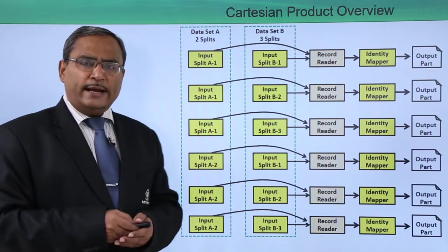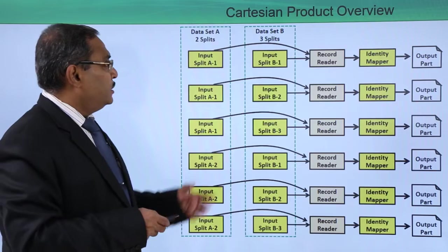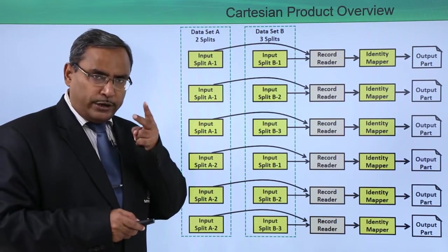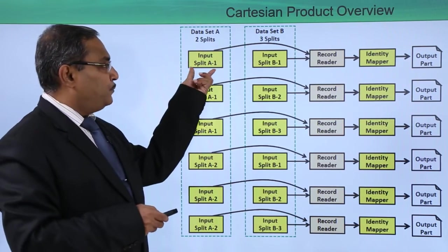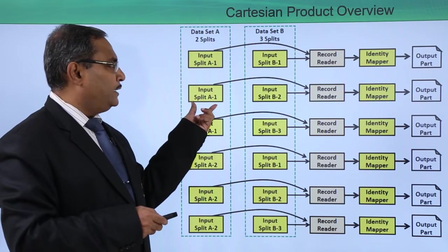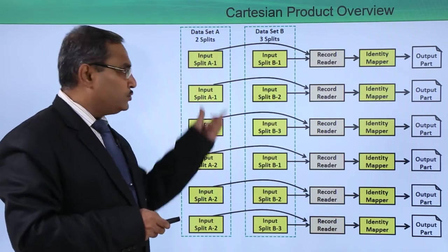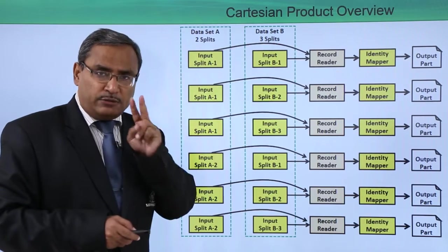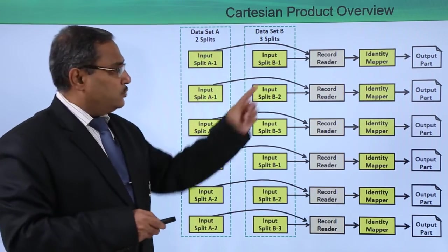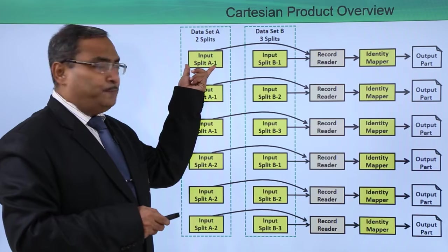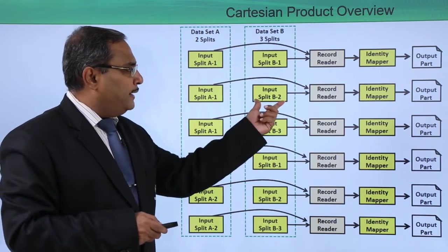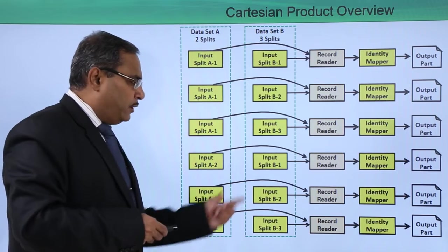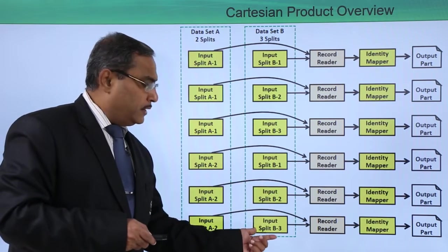So I think now this diagram will clear our conception. Here we are having data set A, it is having only two splits: input split A1 and input split A2. Input split A1 occurs three times because data set B is having three splits. So for input split A1, we are having all the input splits of B. Then for input split A2, we are having all the input splits for B.